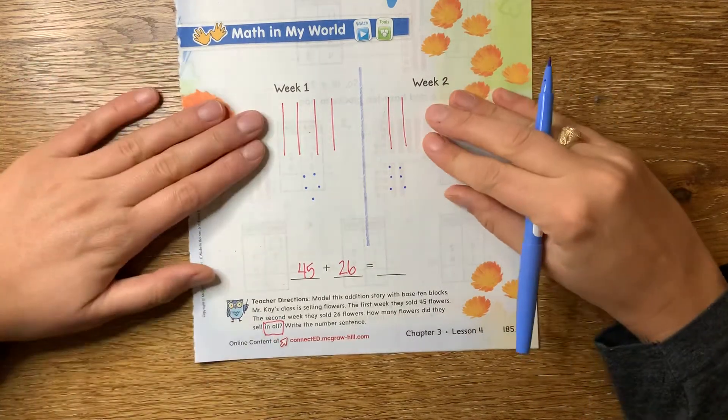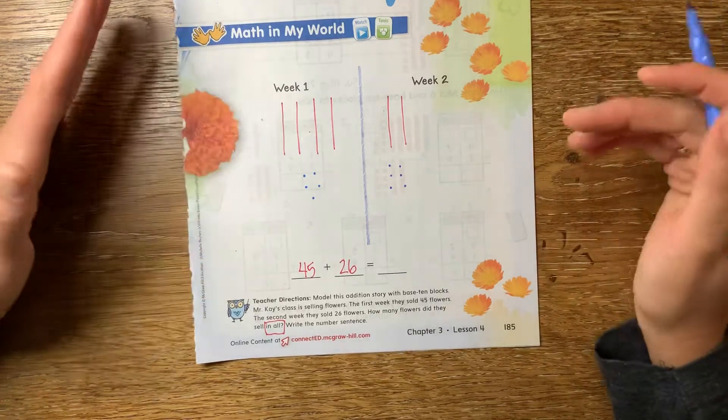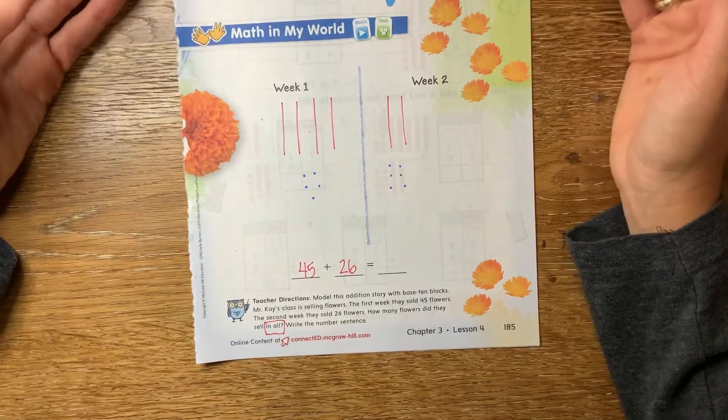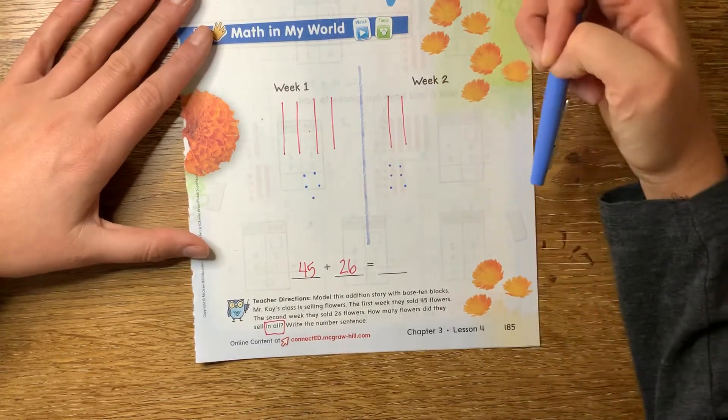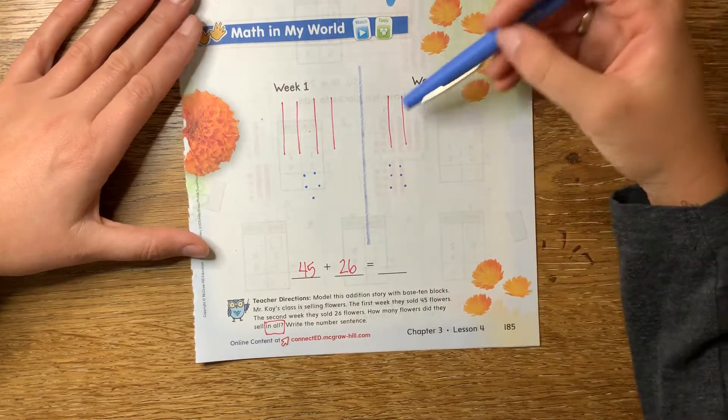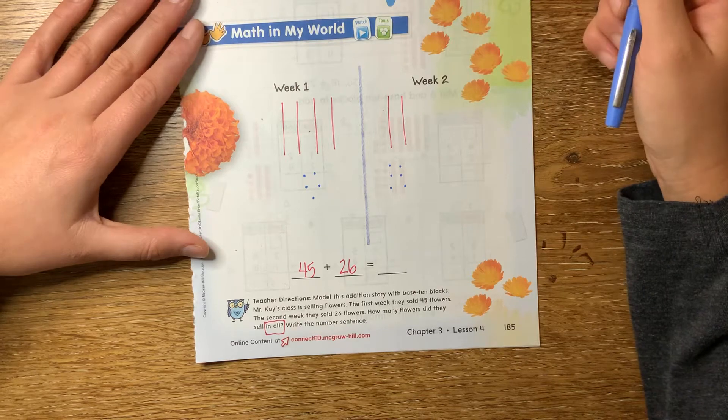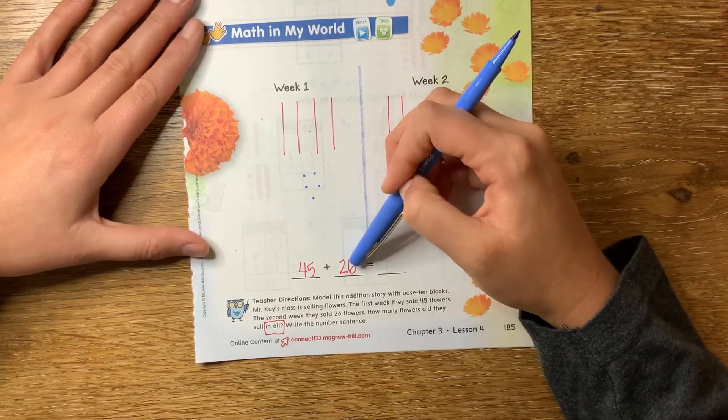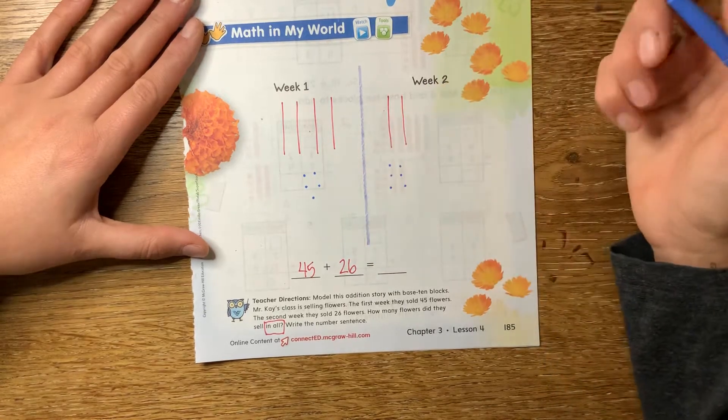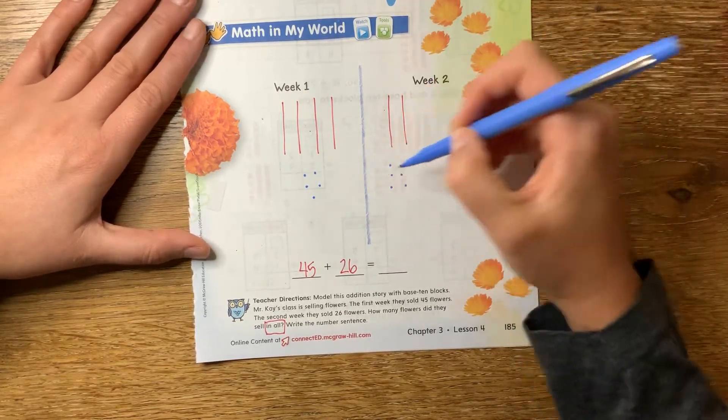All right, so if I were to add this using the base-10 block method, my first thing I need to do always is to add the ones together, right? So five ones plus six ones. Is that going to get me to something over 10? Think about it. Yeah, because I know five plus five is 10, so five plus six is going to be one more than 10, which is 11. So I'm going to circle those 10 ones.